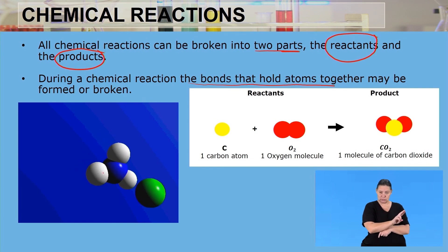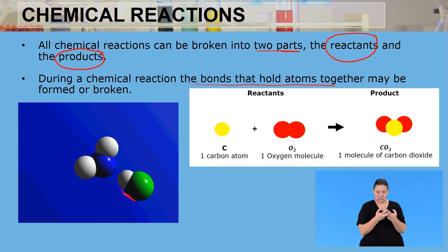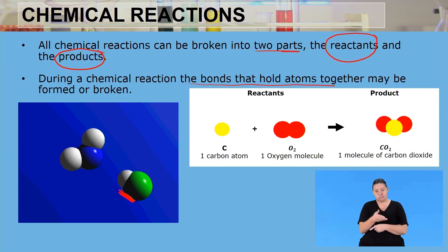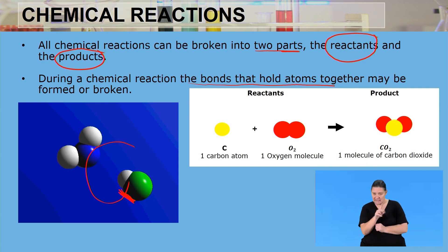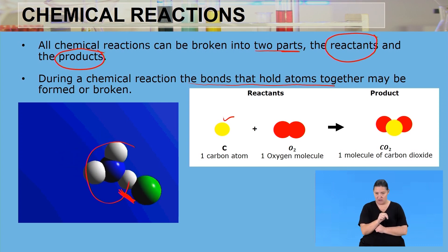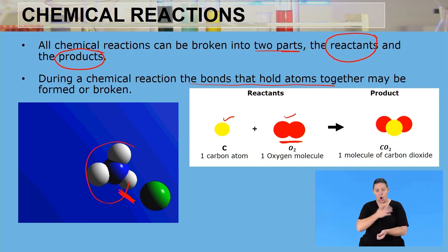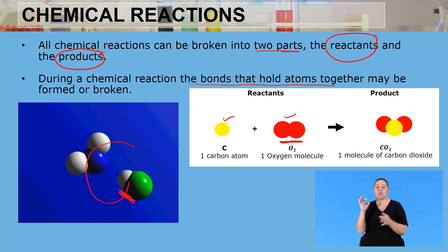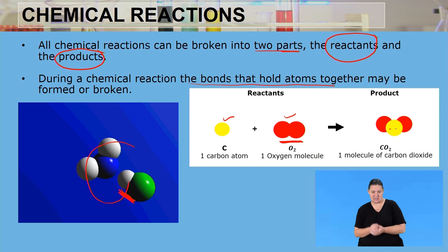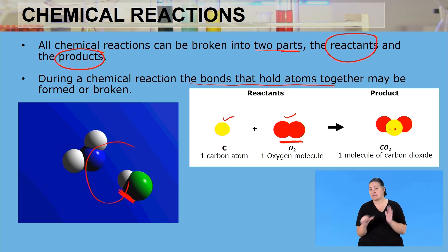As we can see in this picture, we have two reactants and the bonds of the existing compound are breaking while new bonds are forming. In this particular example, we have one atom of carbon and one oxygen molecule. The bond holding the two oxygen atoms together breaks, and new bonds form between the carbon and each oxygen atom. The key point is that in a chemical reaction, the existing bonds must be broken and new bonds must form.